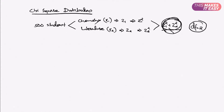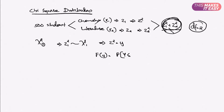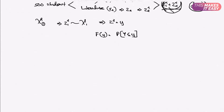We will also talk about the MGF and how chi-square is related to gamma distribution, since it is a variant of it. Starting with one squared standard normal random variable: if z1 is a standard normal random variable, then z1 squared is distributed as chi-square with one degree of freedom. Setting y equal to z1 squared, the CDF of y is F(y) = P(Y ≤ y) = P(z1 squared ≤ y).